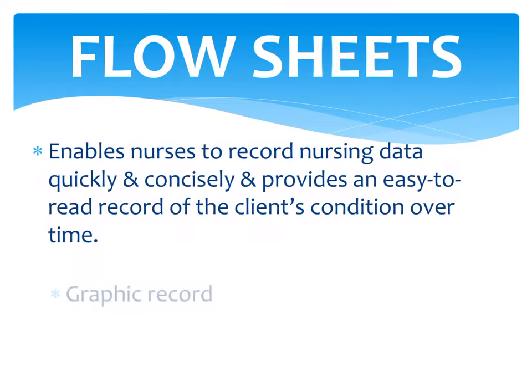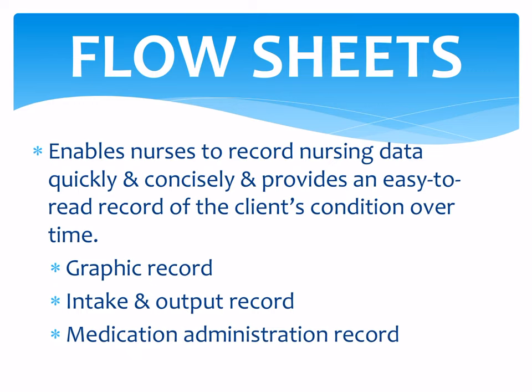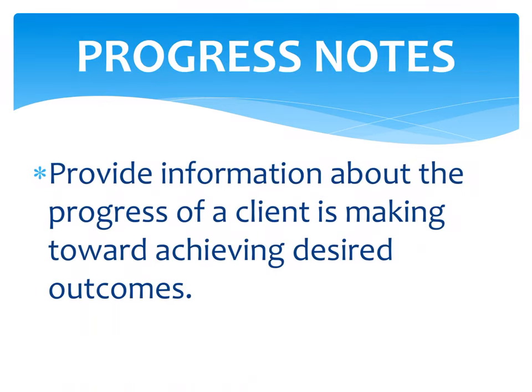Flow sheets enable nurses to record nursing data quickly and concisely and provide an easy-to-read record of the client's condition over time. Examples include graphic records, intake and output, medication administration records, and skin assessment records — each with its own particular form. Progress notes provide information about the progress a client is making toward desired outcomes, recording whether the patient is deteriorating or improving based on nursing assessment.